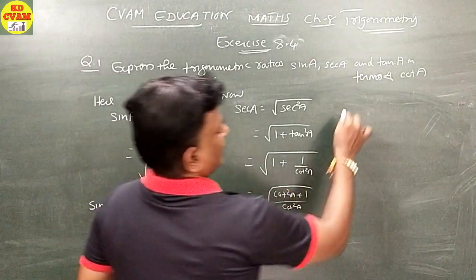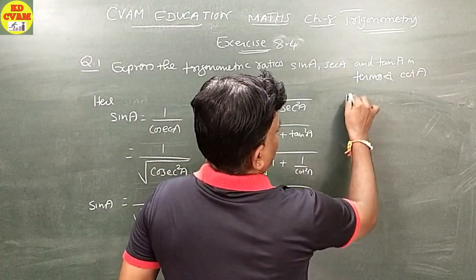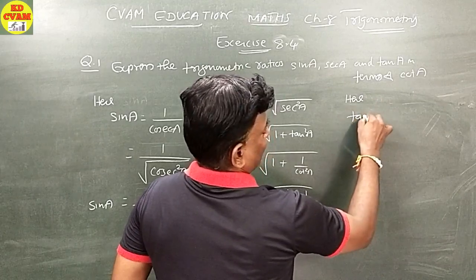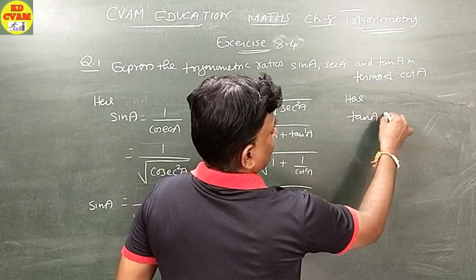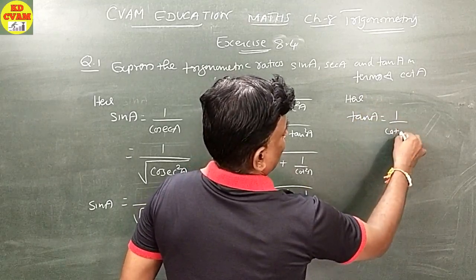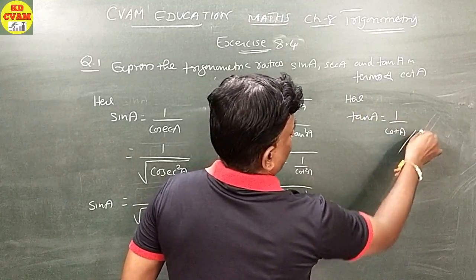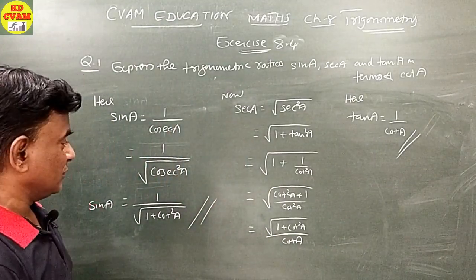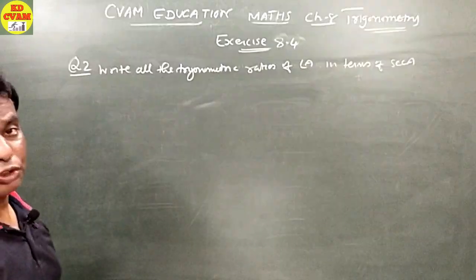Now the third one — tan A. Tan A is simply one upon cot A. That's all, finished.